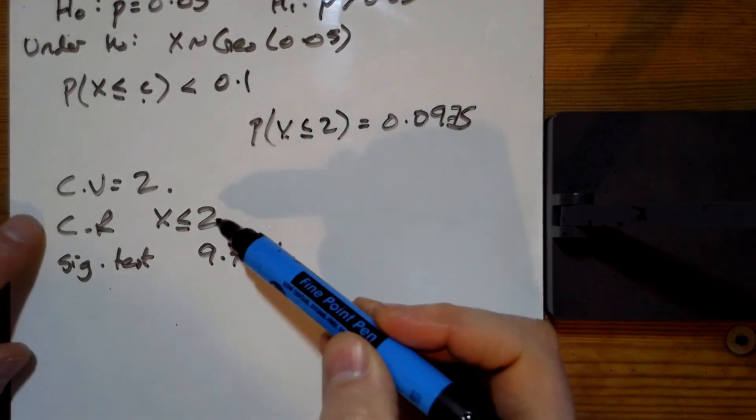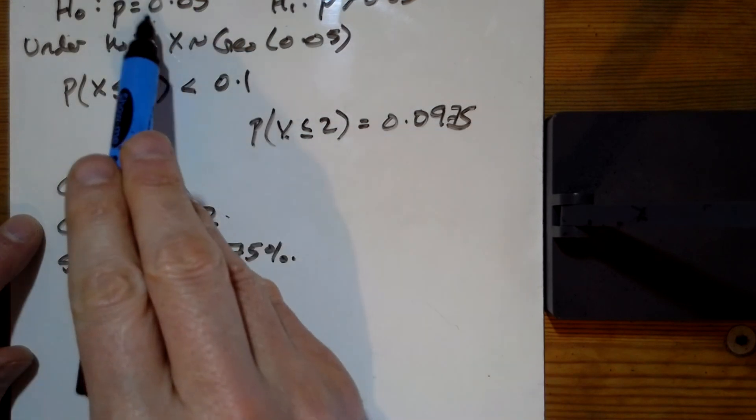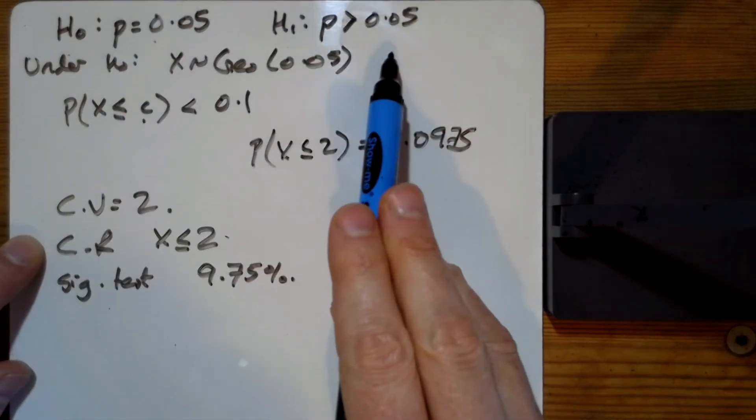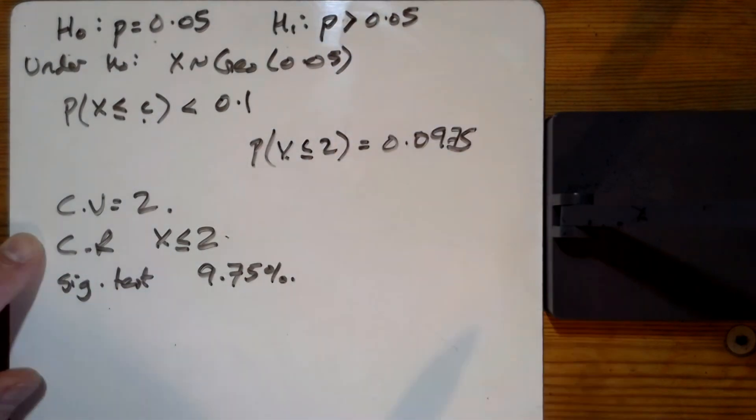So does that make sense? Look, so if X happens to be 2, then we would reject this. And we would suggest that we had a better chance than 0.05 of being successful, because we did it in fewer goes than we might expect.